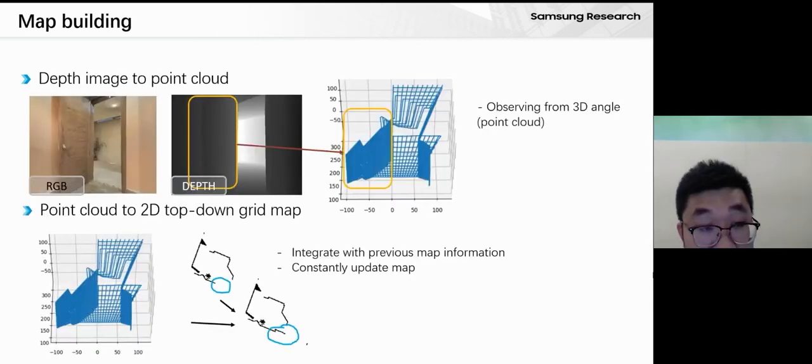The next part of our work is building maps. We collect depth information and convert it to a point cloud, then use the point cloud to make the map. We note that the depth information does not contain any noise.